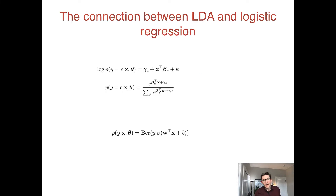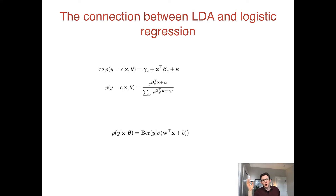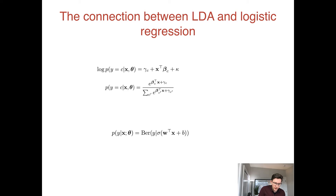It's worth asking: Gaussian discriminant analysis with a tied covariance matrix gave us linear decision boundaries, and logistic regression also gives us linear decision boundaries. So what's the difference between them? Let's go back and look at our analysis of those decision boundaries.